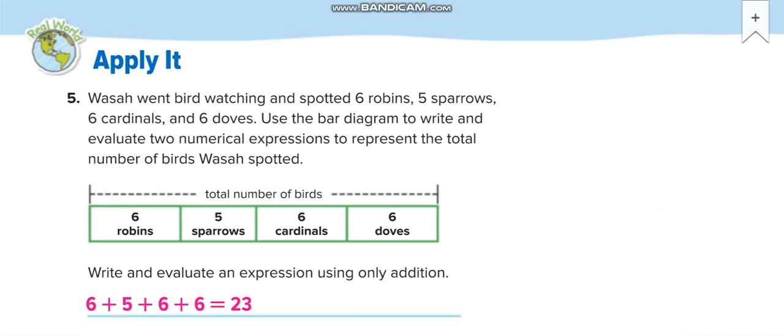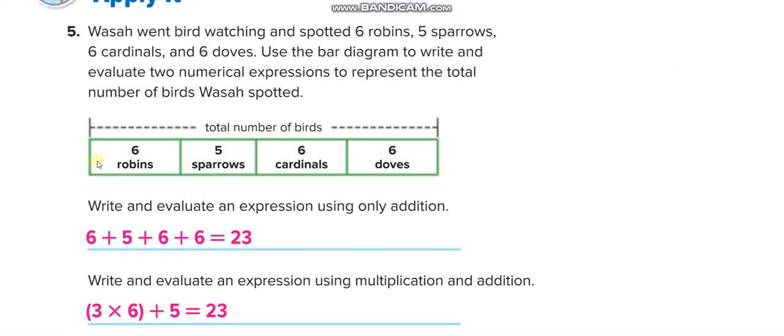Okay, this one now. Here the same thing again—same example. 6, 5, 6, 6—three 6s and one 5. Simple addition. And then 3 times 6 because three 6s, plus 5. Okay, and how we get this bar diagram from this question—we make it. Okay.